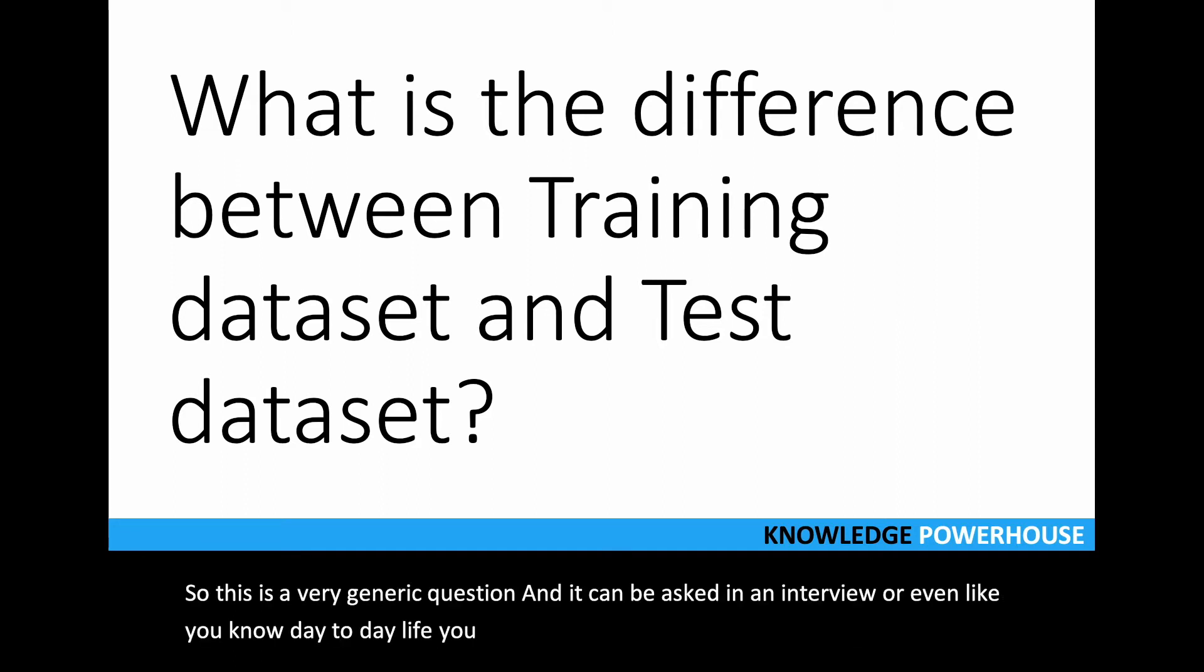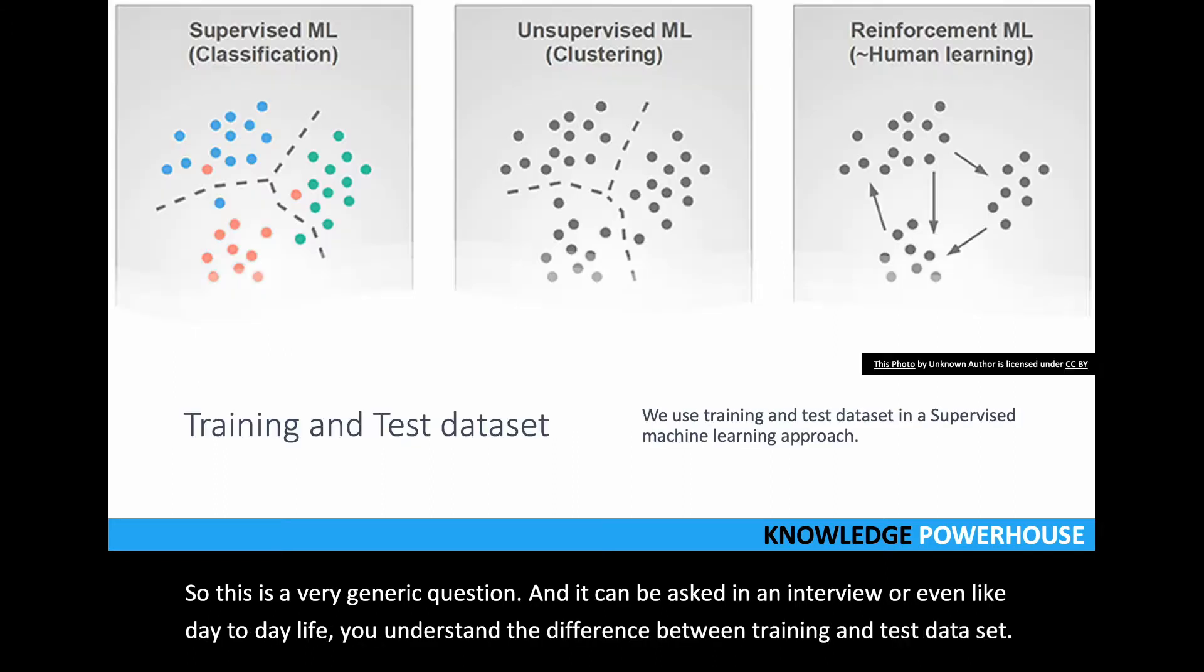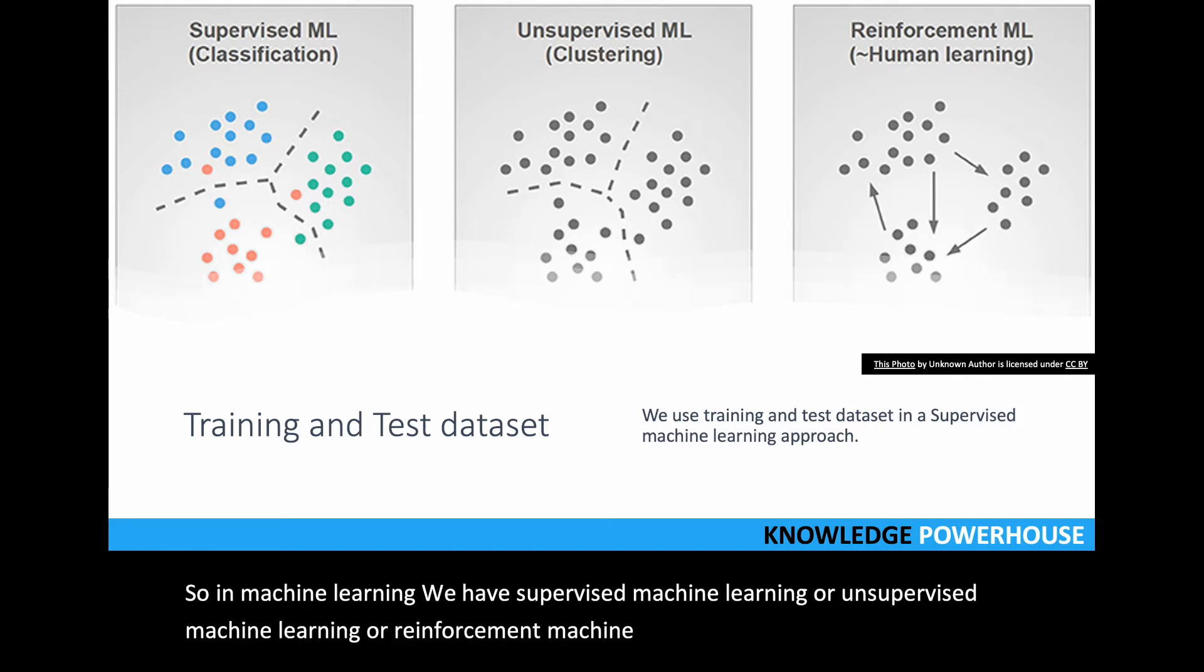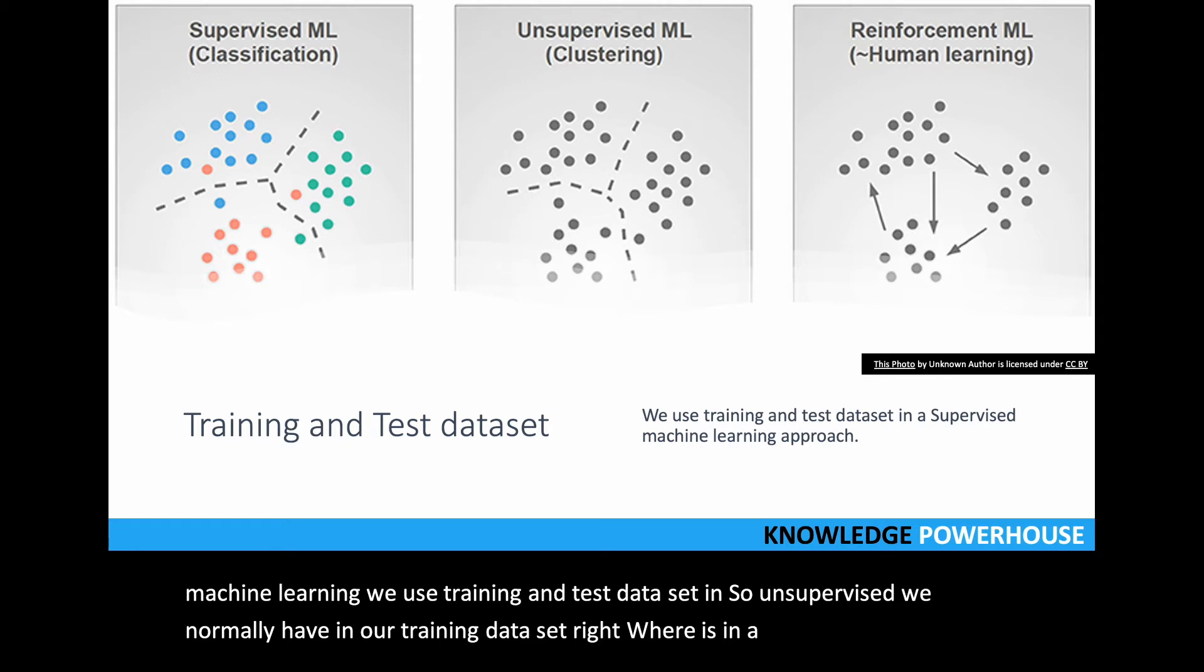The difference between training and test dataset: in machine learning we have supervised, unsupervised, or reinforcement learning. Generally in supervised machine learning we use training and test datasets. In unsupervised we normally have training data, whereas in supervised we know what kind of results we're expecting and based on that we can have training and test datasets.